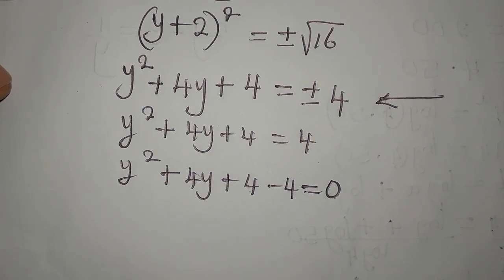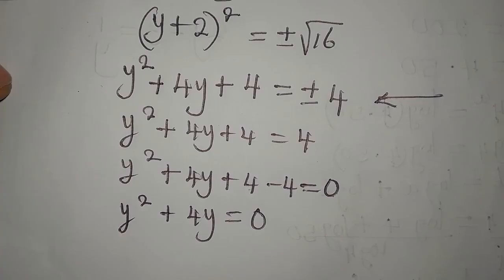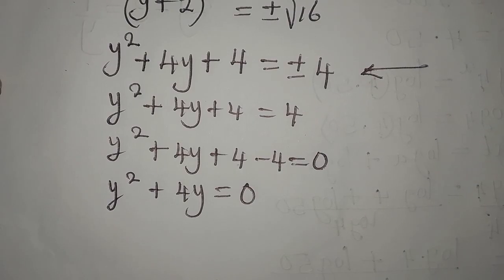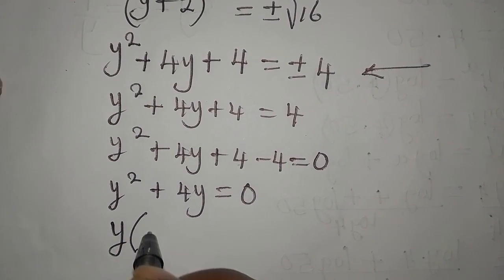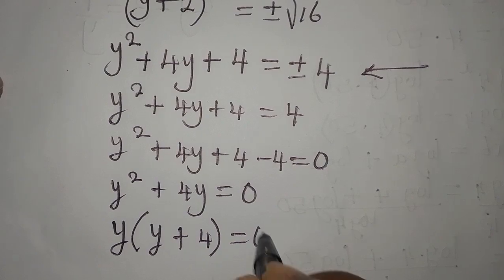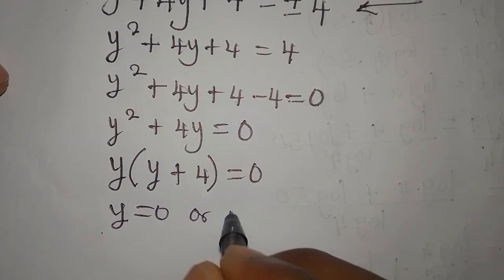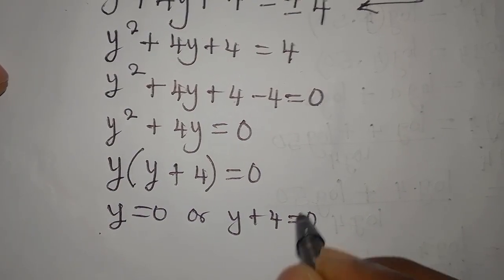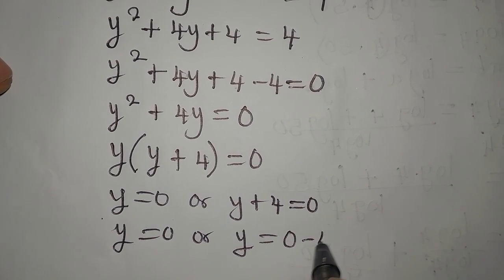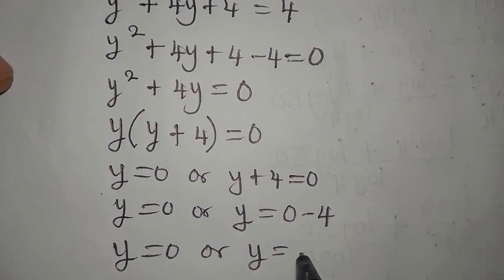The plus 4 and minus 4 cancel, so we have y squared plus 4y equals 0. This is a quadratic equation that can be easily solved by factorization. We pick out y, so we have y times (y + 4) equals 0. From here it is either y equals 0, or y plus 4 equals 0, giving y equals negative 4.